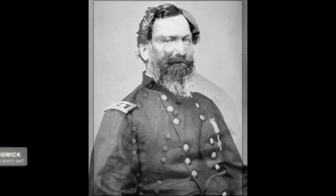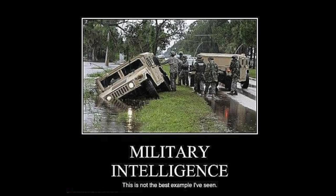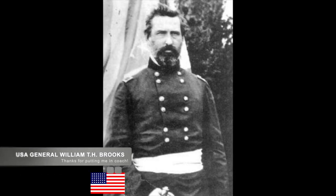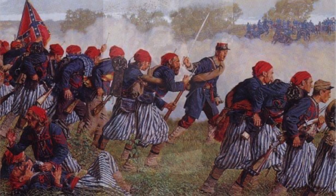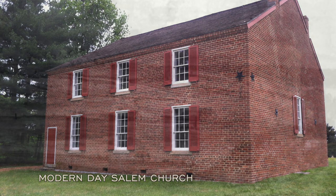Meanwhile, Union General Sedgwick continued towards Salem Church. Initial recon reports indicated only a single brigade of Confederate infantry. Having just cleanly defeated Confederates at Fredericksburg, he detached General William T.H. Brooks and his division. Brooks hit Wilcox and his men on May 3rd at a small brick church that held Wilcox and his Alabama troops. In a quick battle, the Union troops had pushed McLaws' right flank back, but they weren't able to keep their gains as the Confederates' counterattack pushed the Union troops back to their original position.